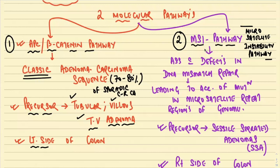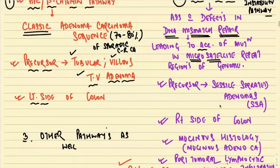The second group we are going to read is the MSI pathway. This pathway is associated with defects in certain DNA mismatch repair genes — genes encoding the enzymes involved in repair. The MSI pathway is associated with defects in DNA mismatch repair genes leading to accumulation of mutations in certain regions of the genome called microsatellite repeat areas.